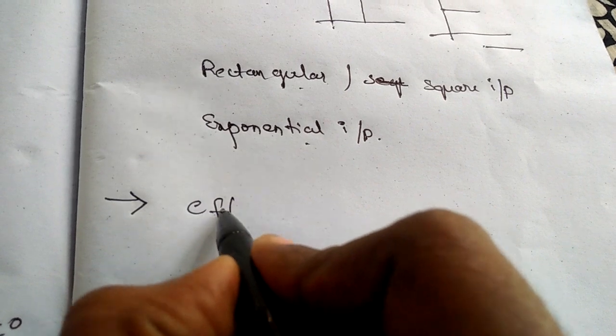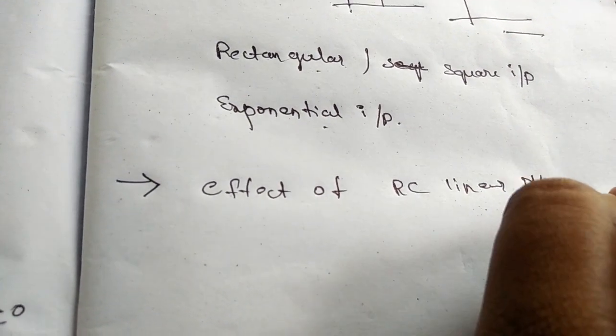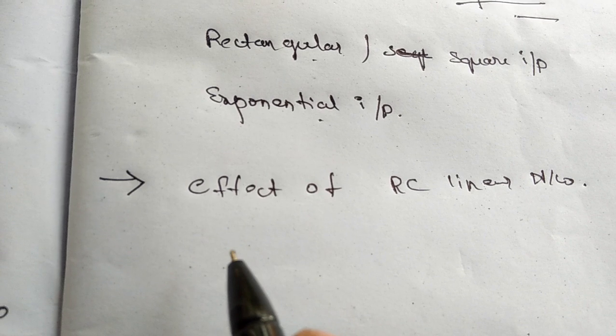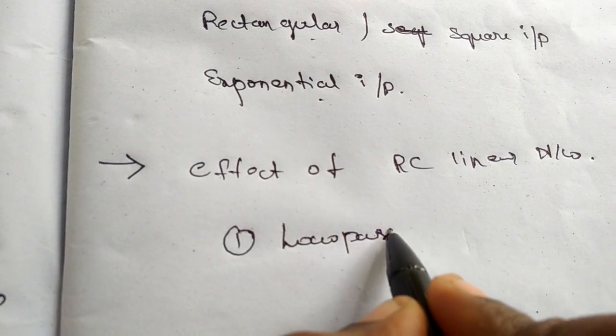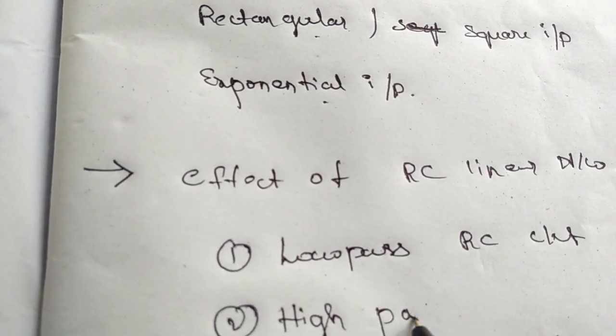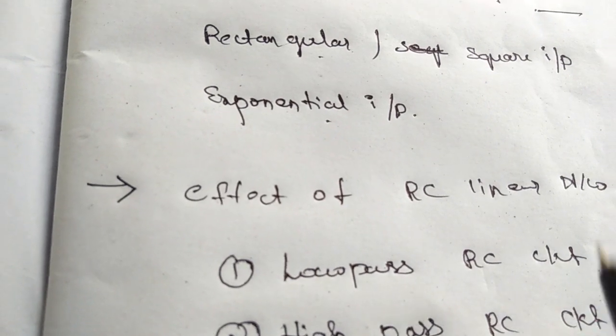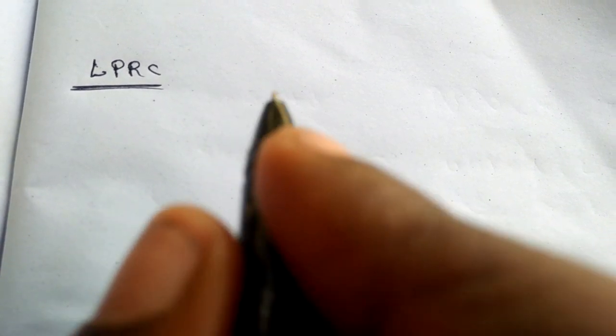What will be the effect of an RC linear network? An RC circuit can be divided into two categories: one is the low-pass RC circuit and the second one is the high-pass RC circuit. These are the two combinations of the RC network. Let me tell you about LPRC, that is the low-pass RC. Low-pass RC is a circuit which transmits only low frequencies and attenuates high frequency signals.